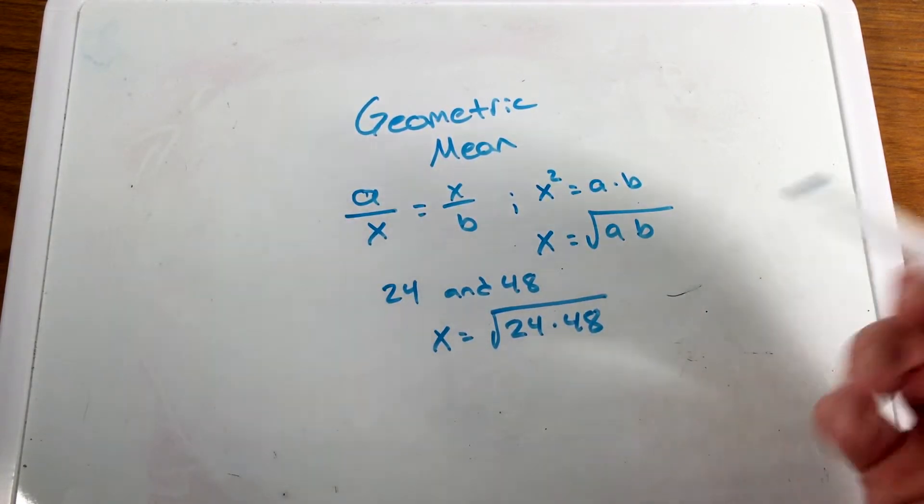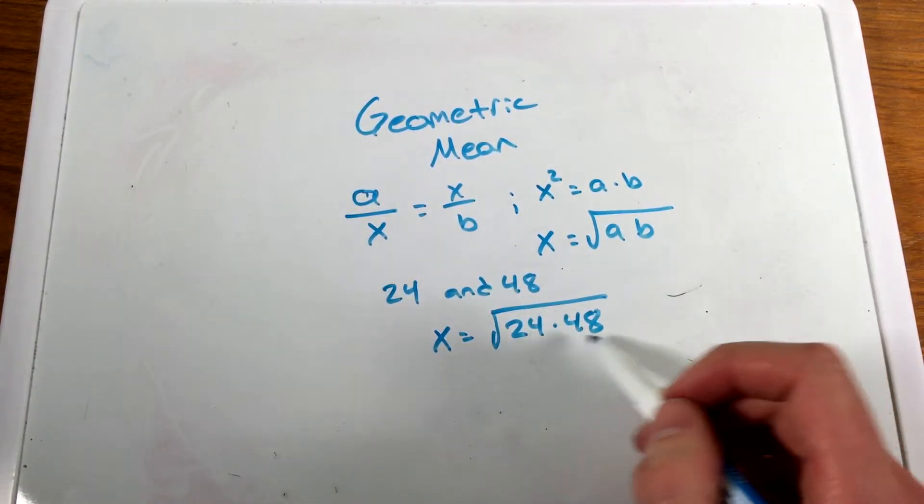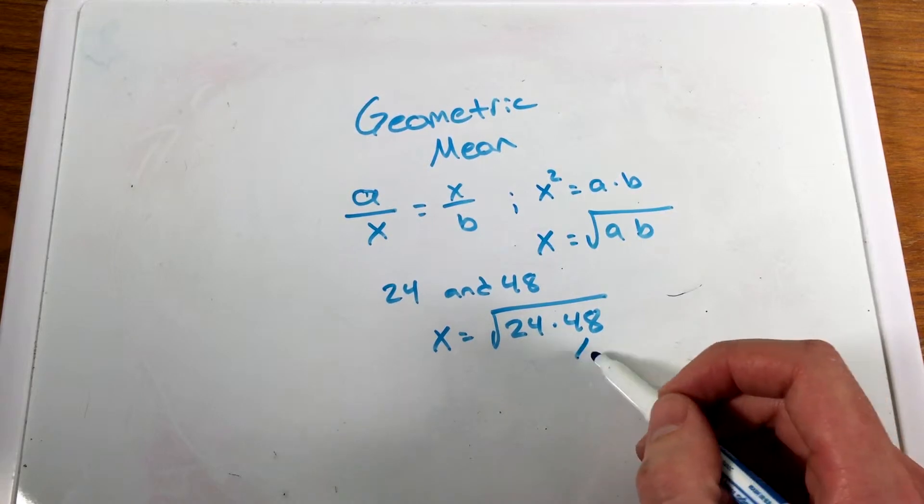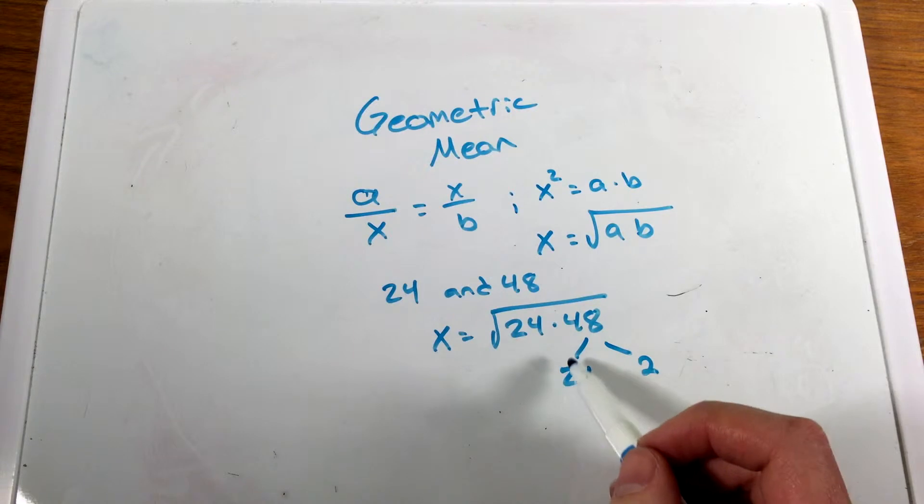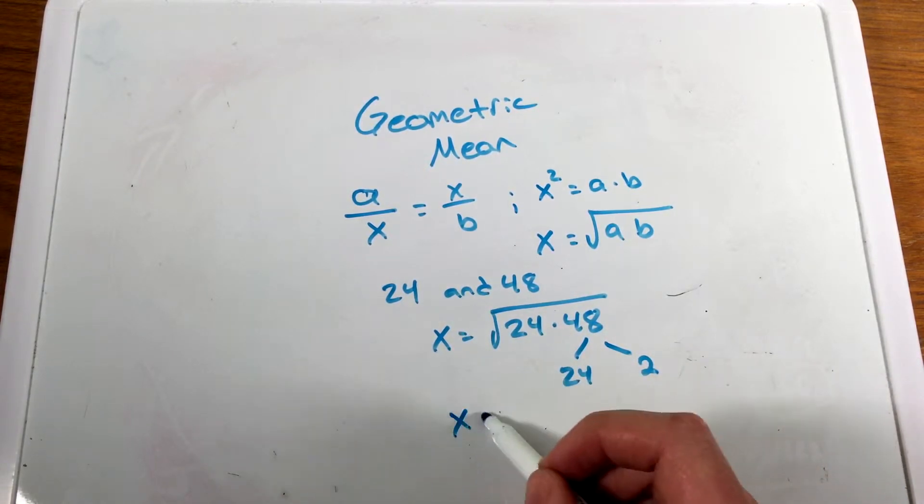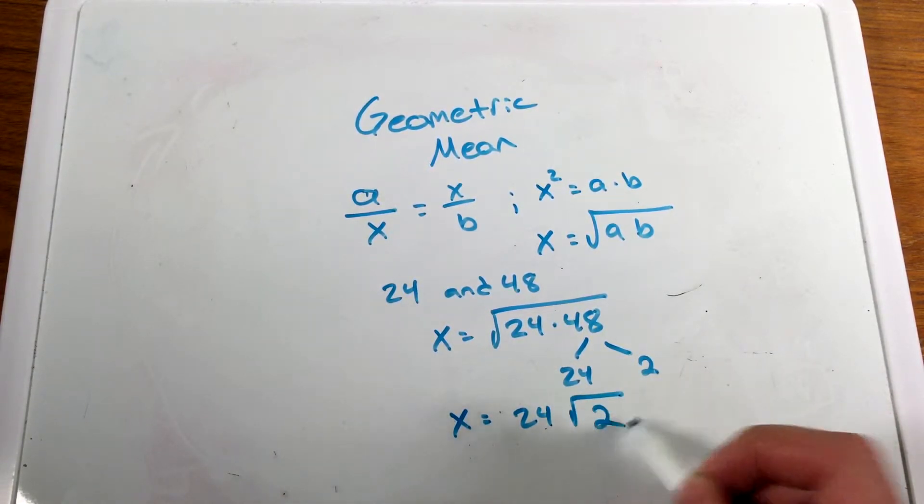We can simplify this without necessarily using a calculator. We can see 24 stays by itself, but 48 can be 24 times 2. And now we have a pair of 24s, which we can bring to the outside of our square root. So x equals 24 square root 2.